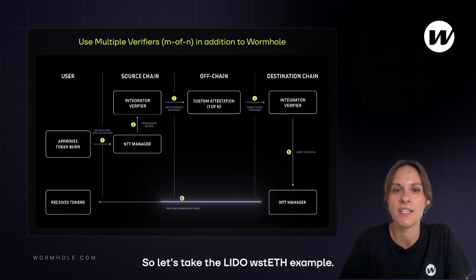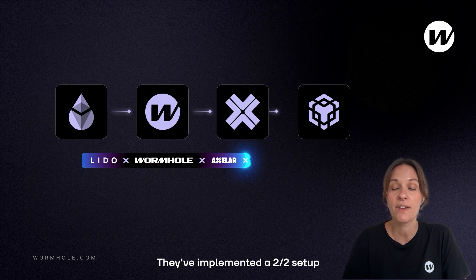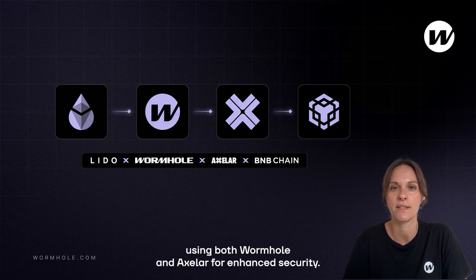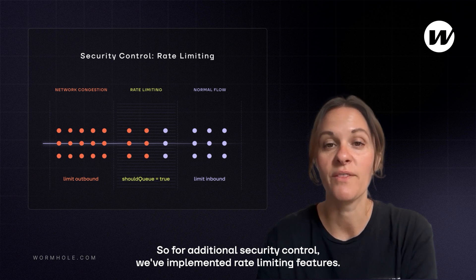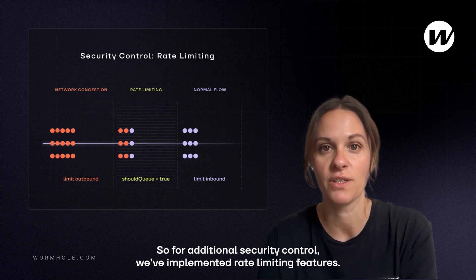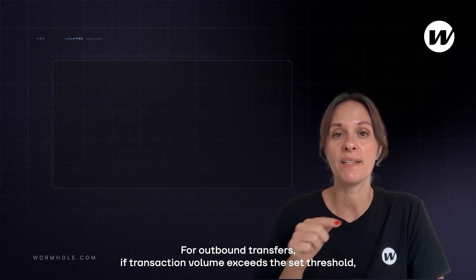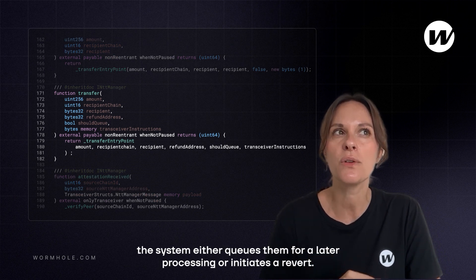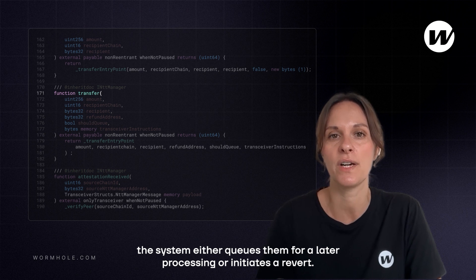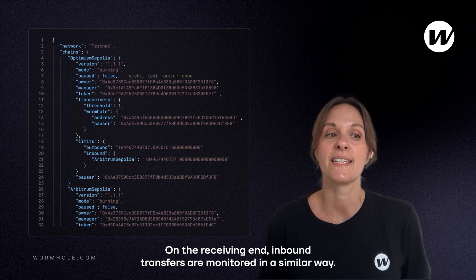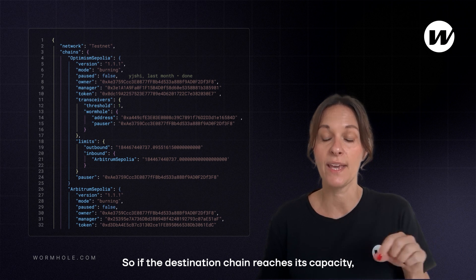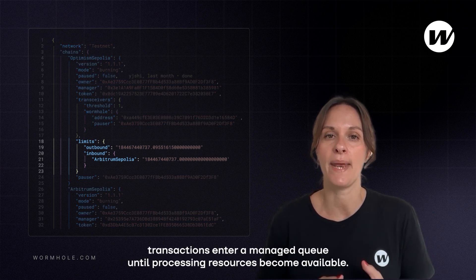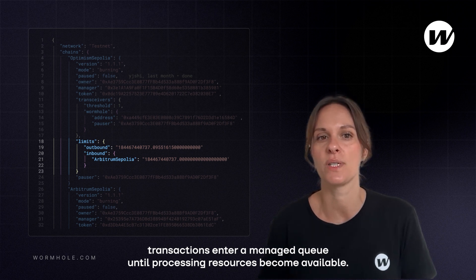Take the Lido wstETH example: they've implemented a 2-of-2 setup using both Wormhole and Axelar for enhanced security. For additional security control, we've implemented rate-limiting features. It works in two directions. For outbound transfers, if transaction volume exceeds the set threshold, the system either queues them for later processing or initiates a revert. On the receiving end, inbound transfers are monitored similarly — if the destination chain reaches its capacity, transactions enter a managed queue until processing resources become available.